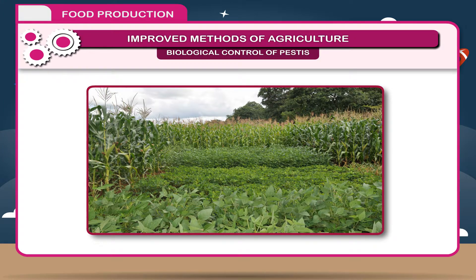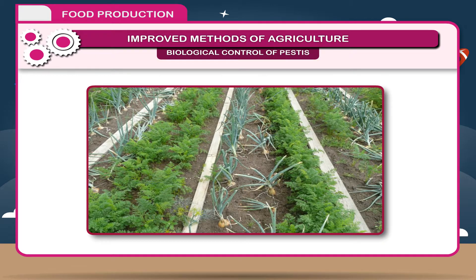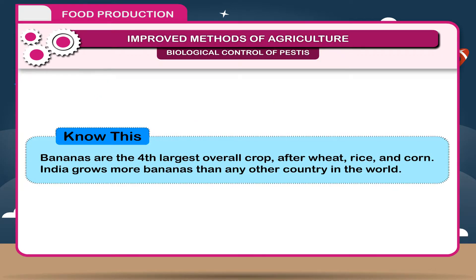Multiple cropping. To increase the yield, cultivation of several crops — 3 to 4 in a year — has been suggested. This is called multiple cropping. We should select some early maturing crops of different types in the same field. Bananas are the fourth largest overall crop after wheat, rice and corn. India grows more bananas than any other country in the world.